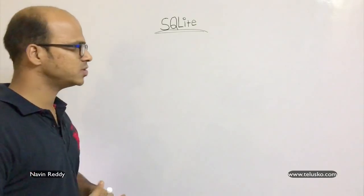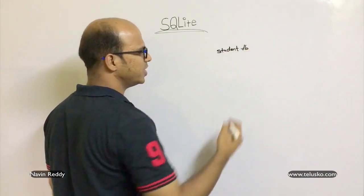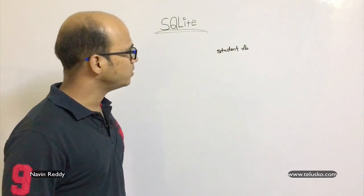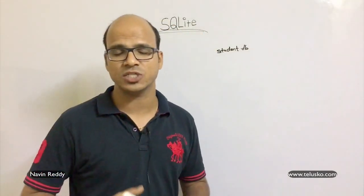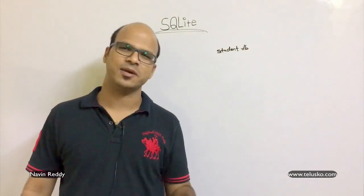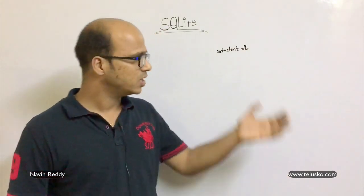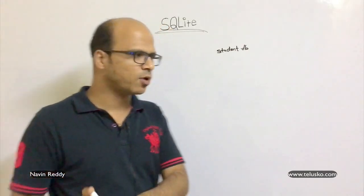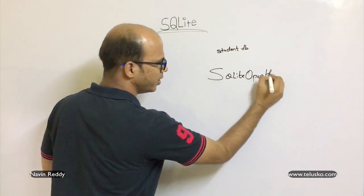To work with a database, of course we need a database. The database name we'll be working with is student.db — you can change the extension, that's not the issue. This database will be private to your app; it is secure. For example, an app like Truecaller cannot use your app's database because it's a different application. This database will only work within your own app's context, so you have to link your application with the database.